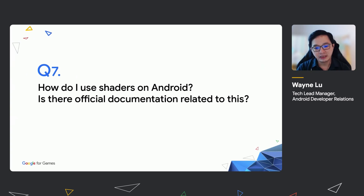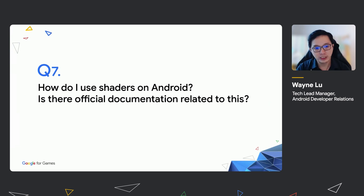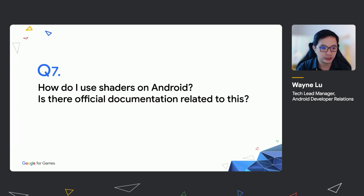On to question number seven, how do I use shaders on Android? Is there any official documentation related to this? Yes — Android games use OpenGL ES or Vulkan for rendering. These are technologies offered by the Khronos Group. You can find our documentation on OpenGL ES or Vulkan for more information. We also provide different tools for you to profile and visualize your GPU rendering on Android. The link is below for all the detailed information.